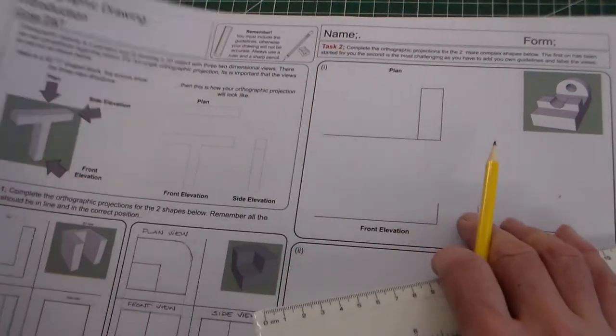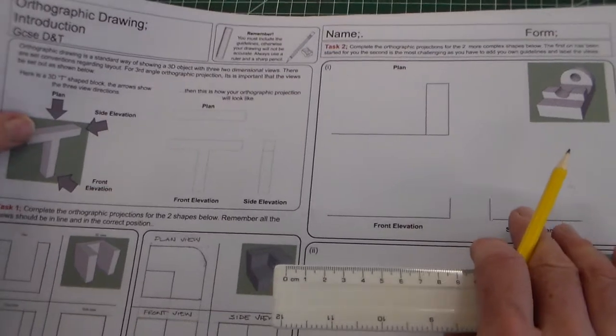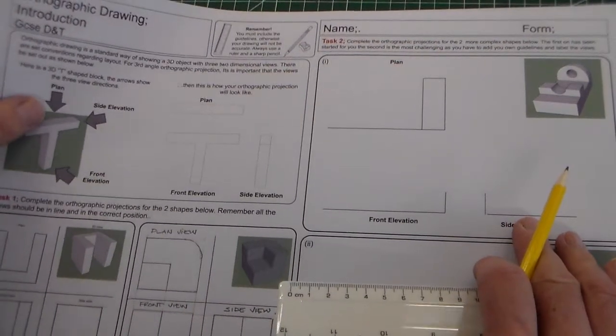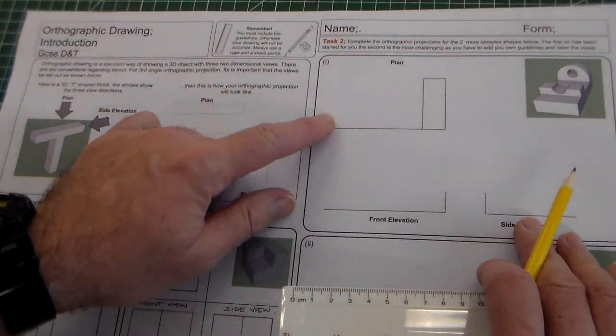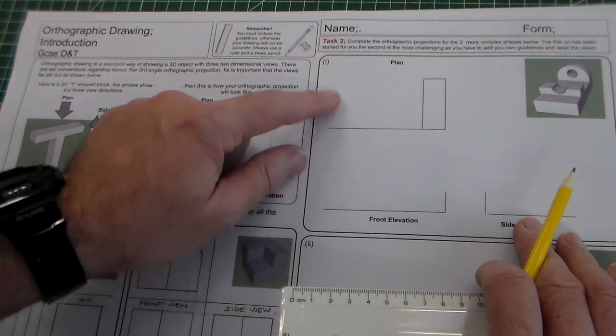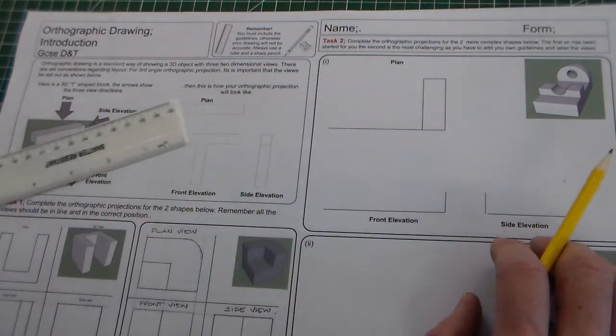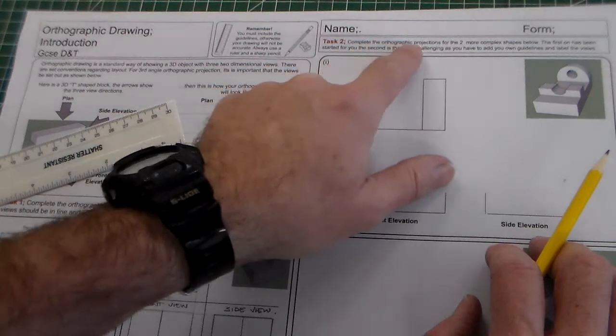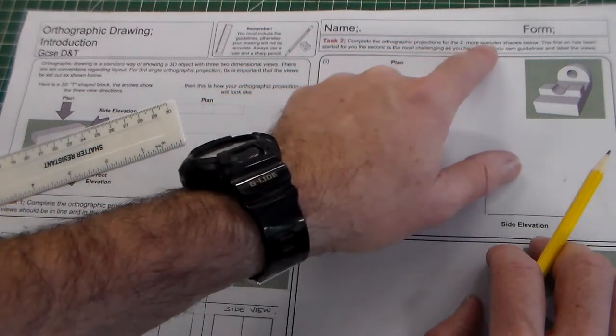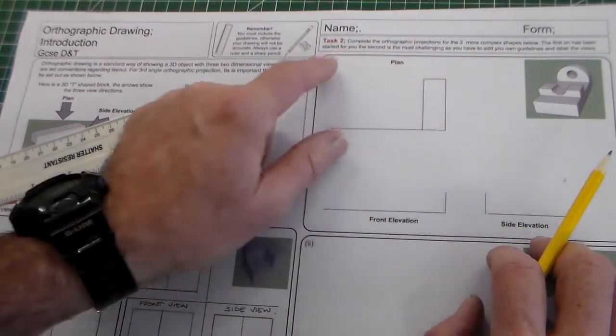Hello, we're looking at this orthographic drawing introduction sheet and I'm going to have a go now at task two. Task two says complete the orthographic projections for the two more complex shapes below.